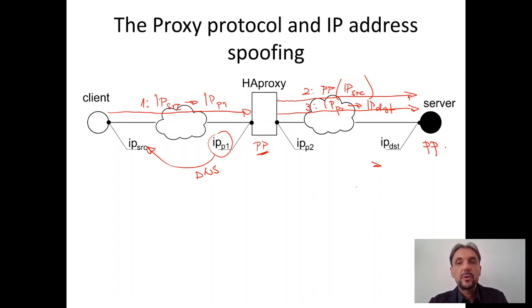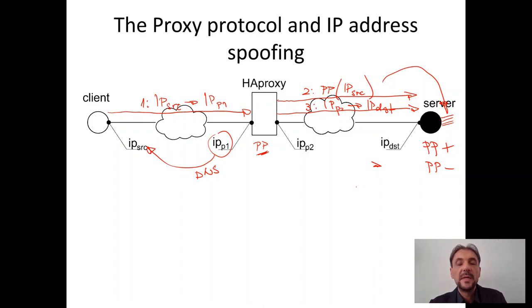If the server is proxy protocol capable, it will fill its internal records with the information learned from the proxy protocol header. If the server is not proxy protocol capable, it will not fill that information and the source IP address information will be lost. An important point is that testing has shown that well-known protocols do not stall if they do not recognize the proxy protocol header. For example, if it is a web server that is not proxy protocol capable, the web server will reply to the proxy protocol header with a bad request, but will continue with the communication.